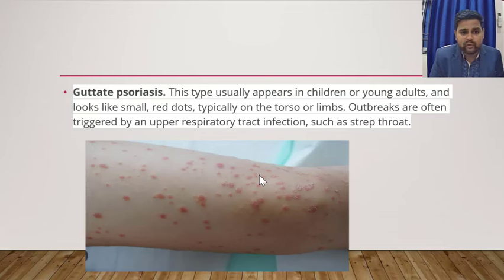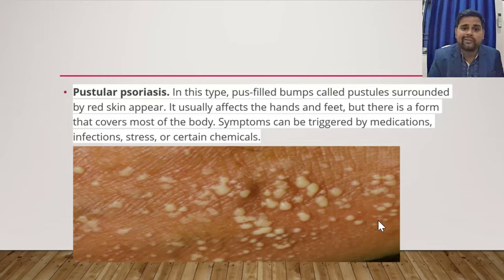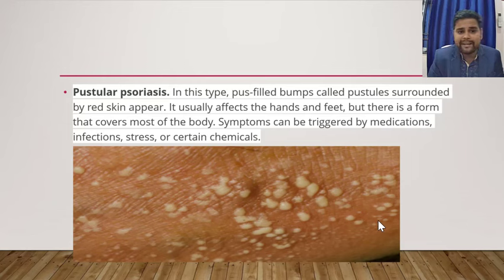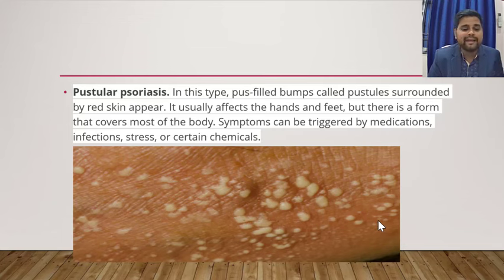Pustular psoriasis presents with pus in the psoriatic eruption. Pus-filled bumps or pustules surrounded by red skin appear, affecting the hands and feet, though there is a form that covers most of the body. Symptoms can be triggered by medication, infection, stress, or certain chemicals.